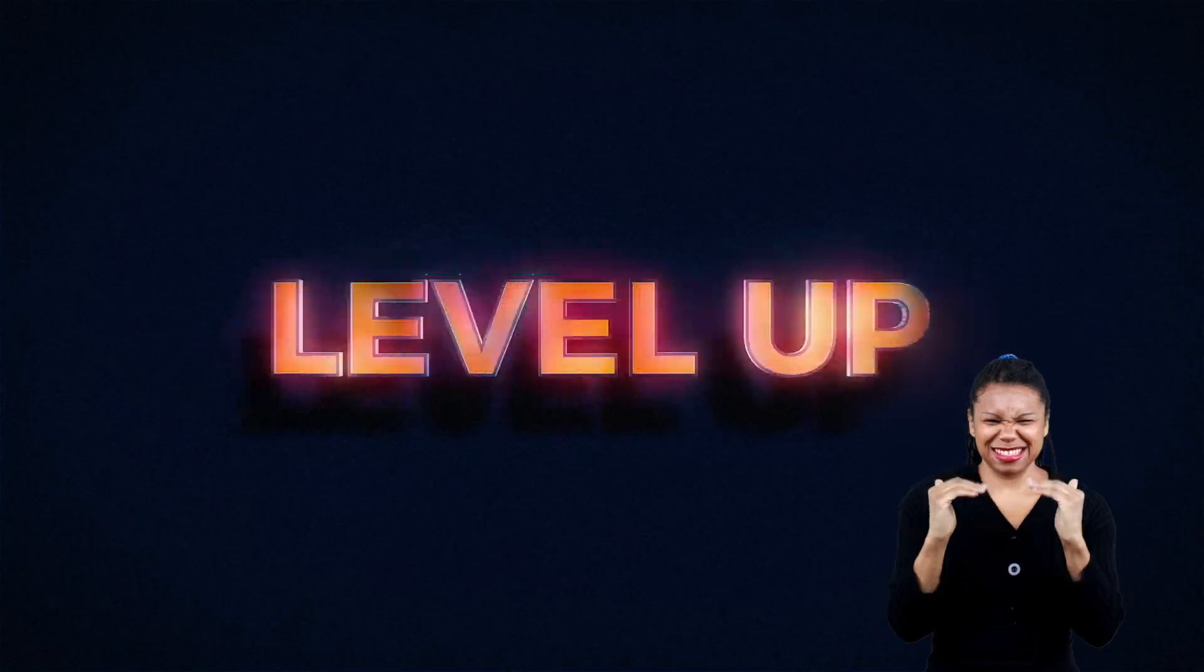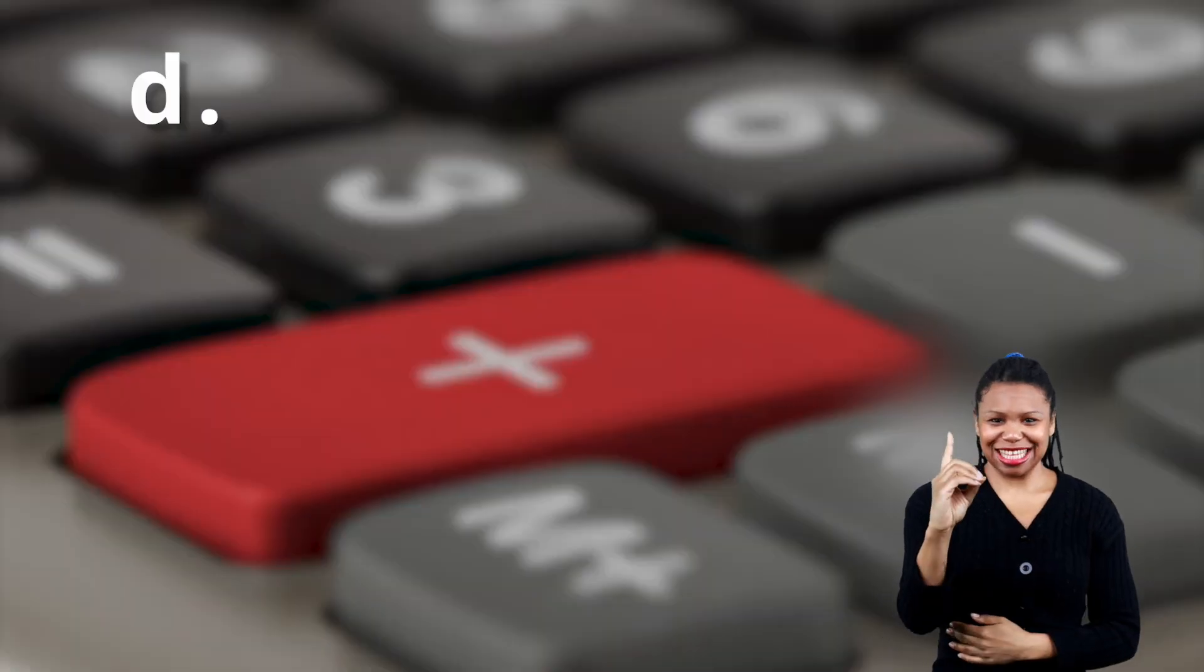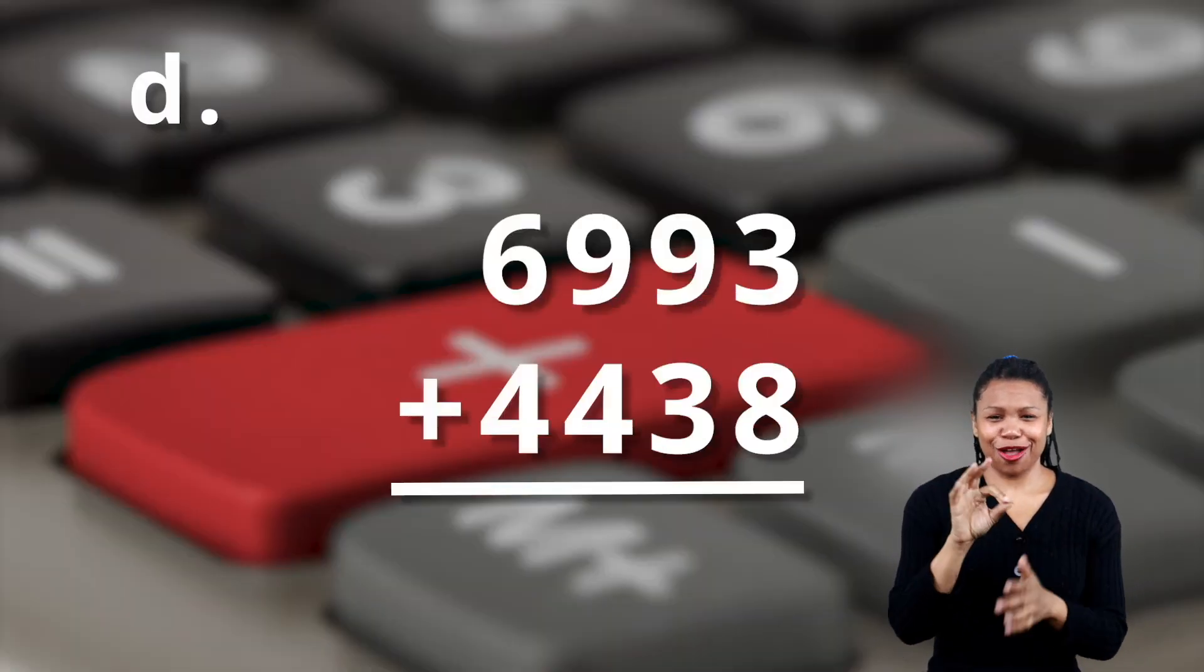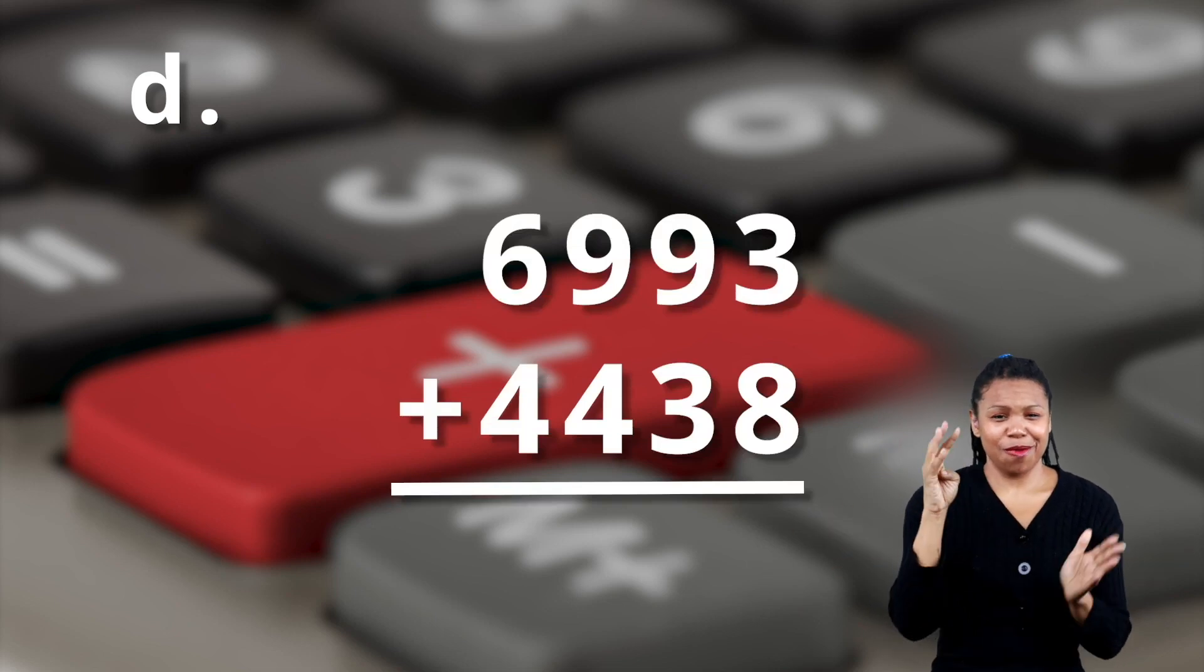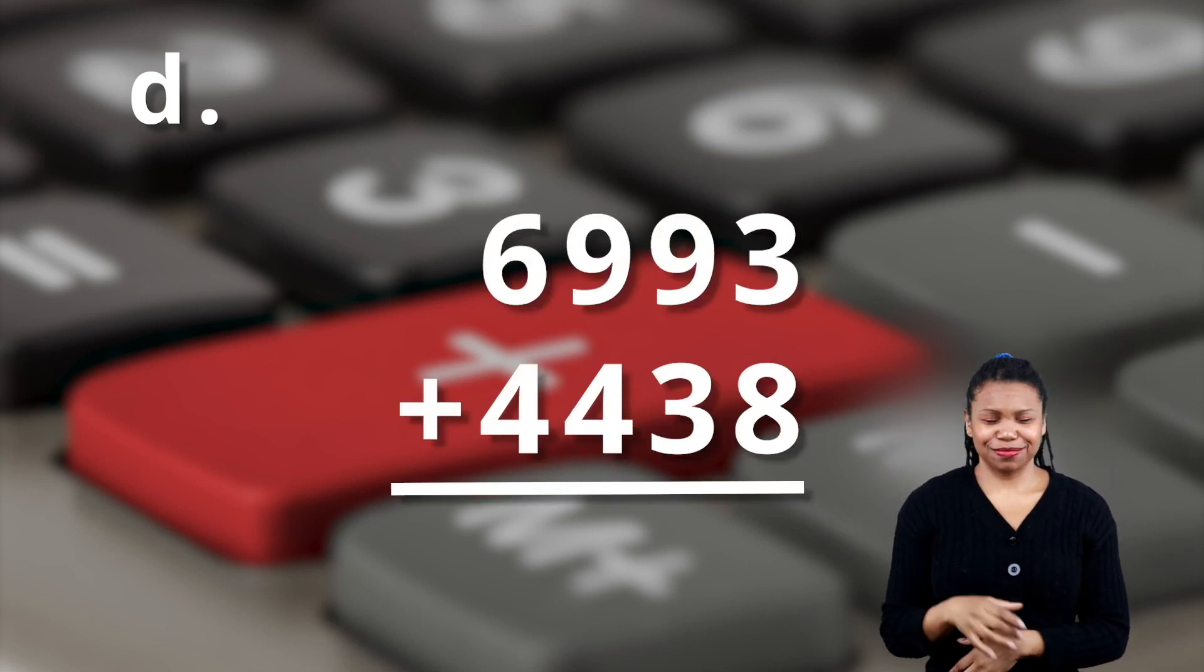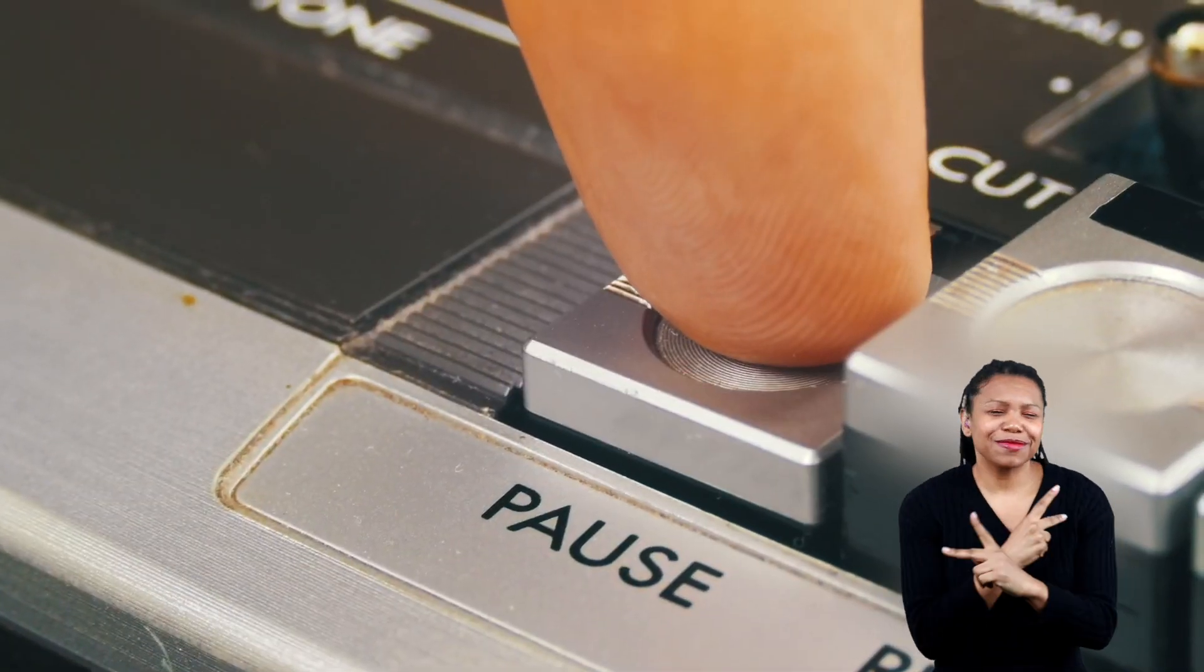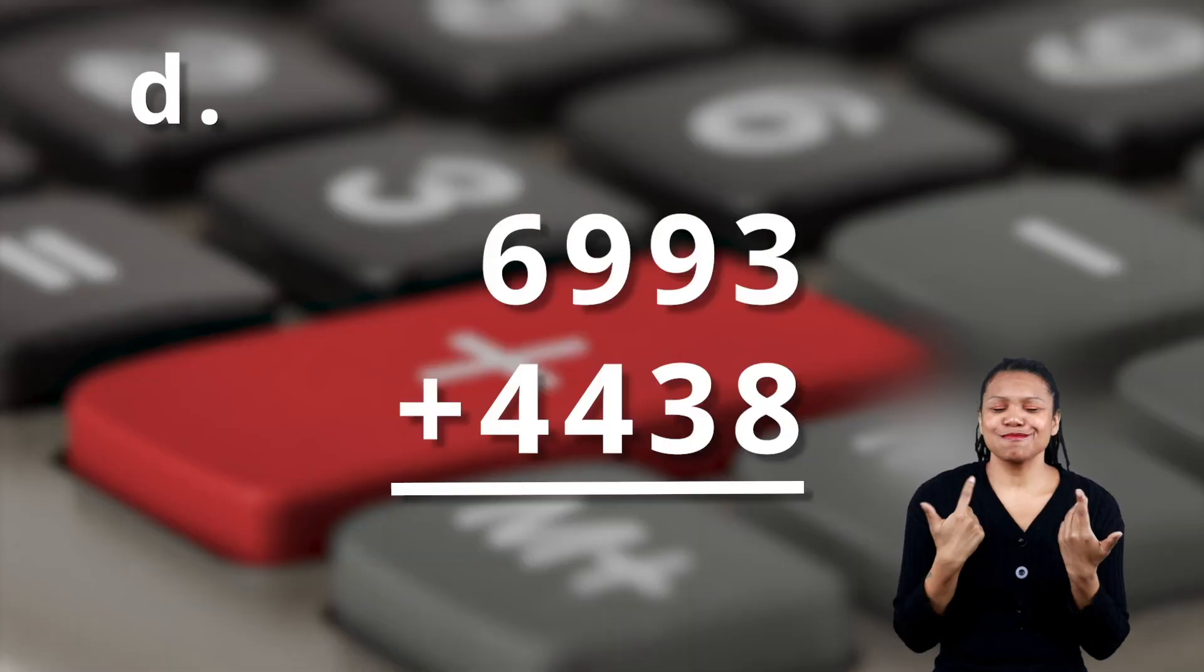Let's move up a level. Example D. We've got six thousand nine hundred ninety-three plus four thousand four hundred and thirty-eight. Pause the video and see if you can do this one on your own. I'll wait.